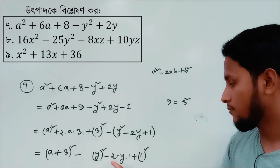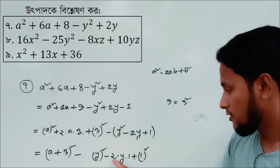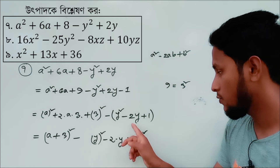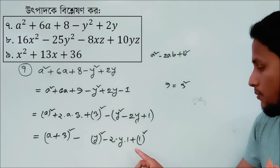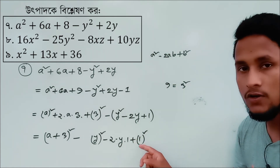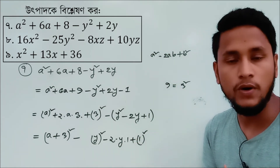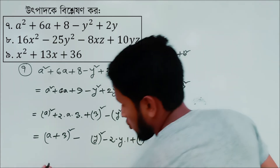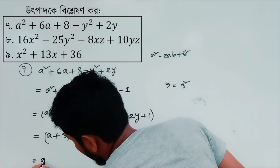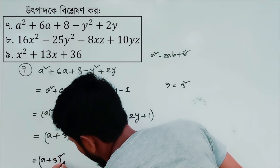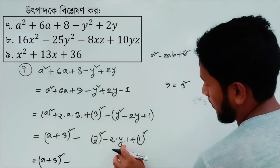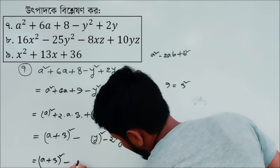y squared is equal to y squared. 2a is equal to y. 2a is equal to 1. 1 into 1, 1 is equal to 1. A plus 3j is equal to minus: a squared minus 2ab plus b squared is a minus b squared.